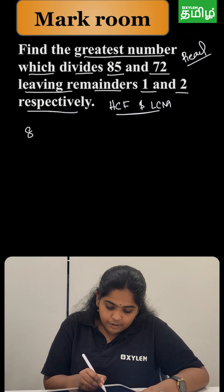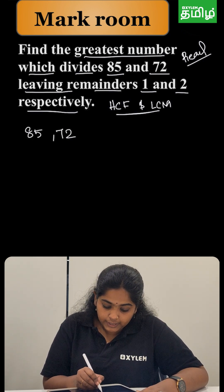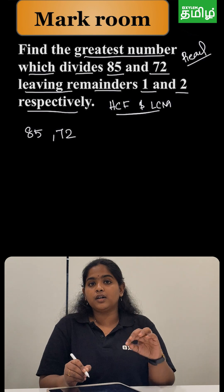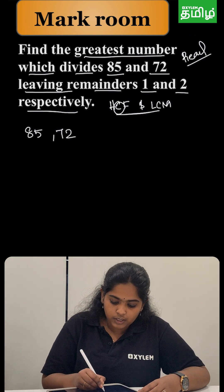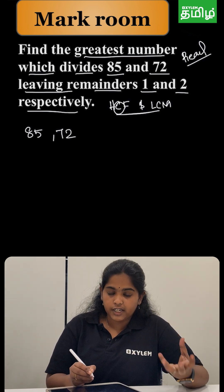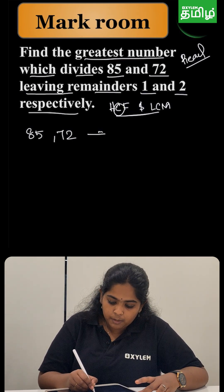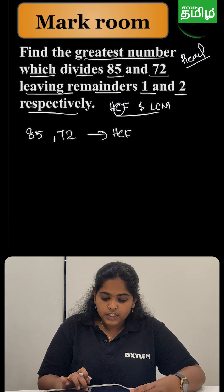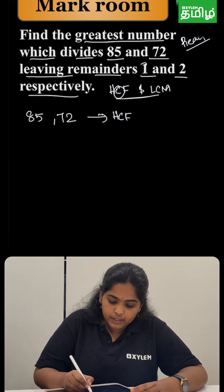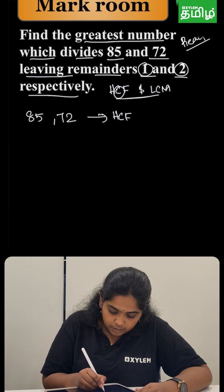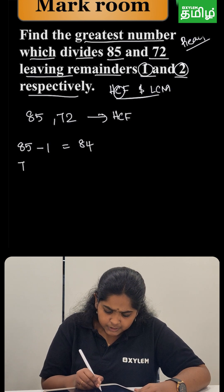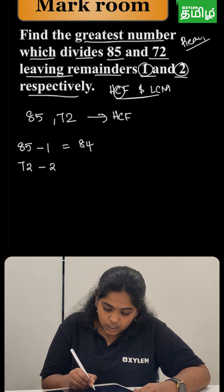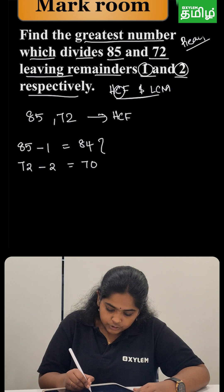85 and 72 share a common divisor, which is the highest common factor (HCF). The approach is to subtract the respective remainders: 85 minus 1 gives 84, and 72 minus 2 gives 70. We now need to find the HCF of these two numbers.